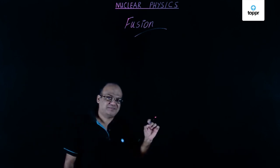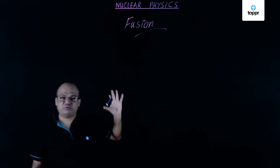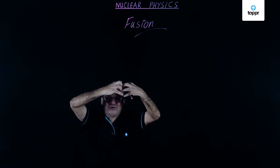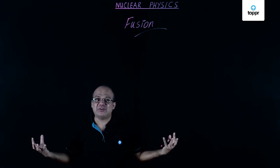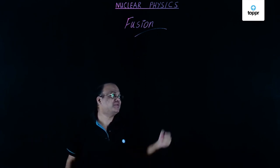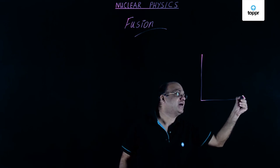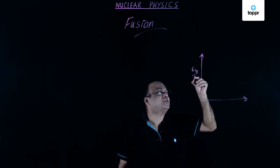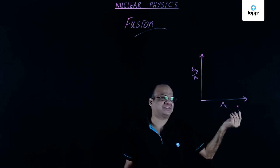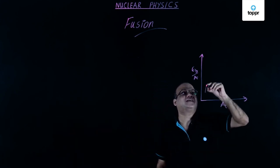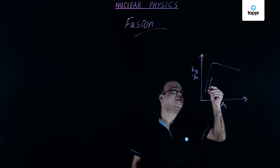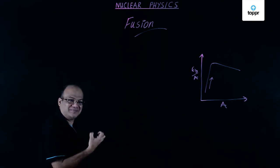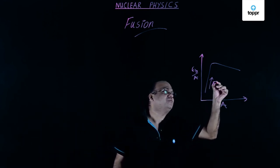In this lesson we are going to learn about nuclear fusion. Nuclear fusion means two light nuclei combine to form a heavy nucleus. Recall the graph of binding energy per nucleon (Eb/A) against mass number: as we move from lighter to heavier nuclei in the lower mass range, binding energy per nucleon increases — and that is what nuclear fusion is.